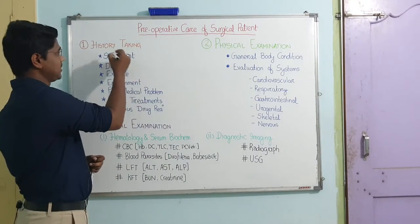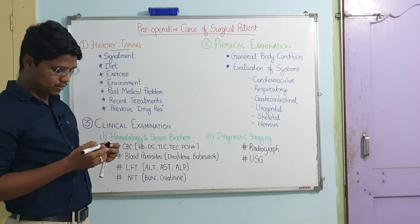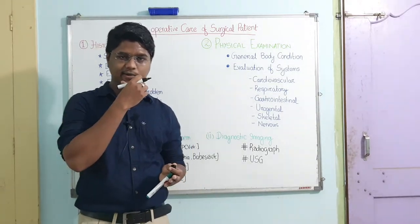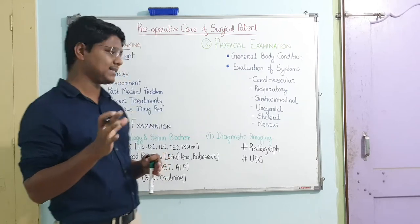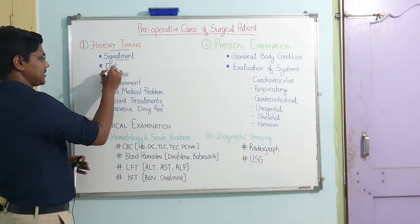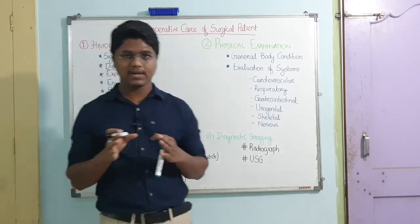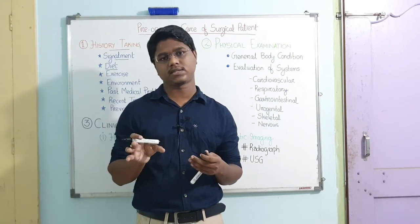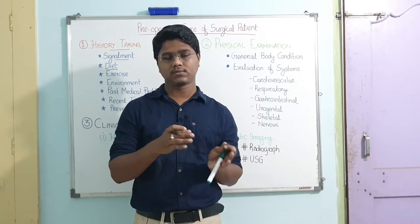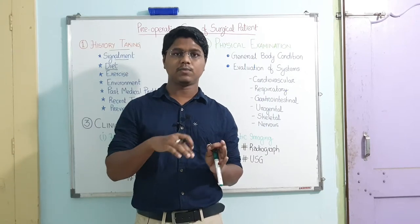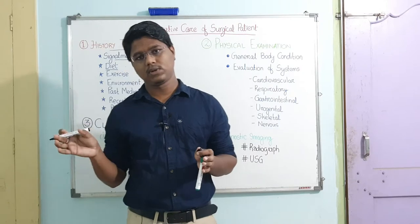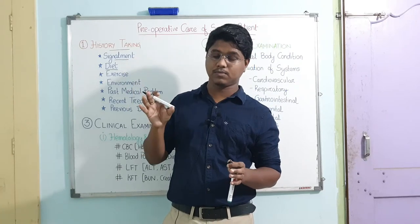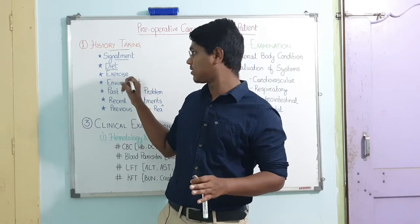The most important thing is history taking. The first point is signalment — from when the disease has started, from when the animal has shown the symptoms. Next is diet. If you know what the animal has been eating, you can assess the nutritional status and give a guarantee on wound healing. If the animal is on a commercial diet, which is basically a balanced diet, wound healing will be fast. Diet is also important during surgery — you should have fasting before surgery, which I will discuss later.